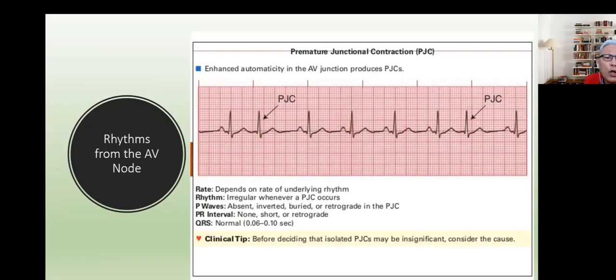So there's also what is called a premature junctional contraction. A premature junctional contraction is something that's early, and that the morphology of it is going to be different. And so let's take a look over here. We have a regular rhythm, and all of a sudden, there's an early beat designated by the arrow. And so therefore, we call this premature.